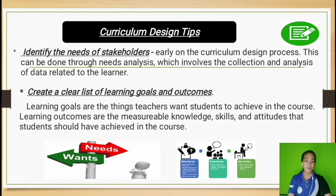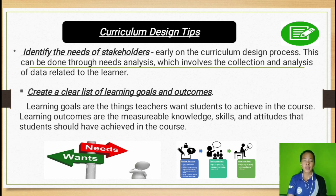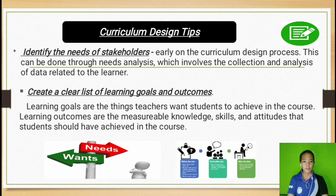Learning goals and outcomes: learning goals are the things teachers want students to achieve in the course — what an instructor and the institution aims to do for their learners. Learning outcomes are the measurable knowledge, skills, and attitudes that students should have achieved in the course. Examples include knowledge, comprehensive analysis, and so on.